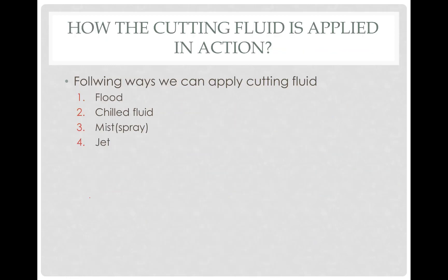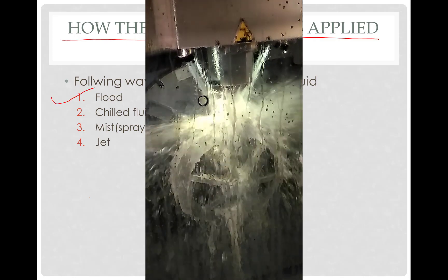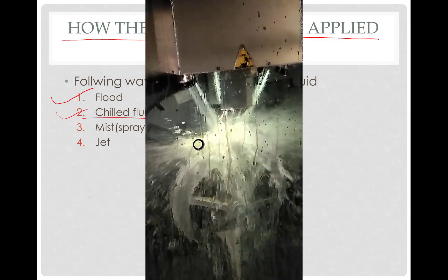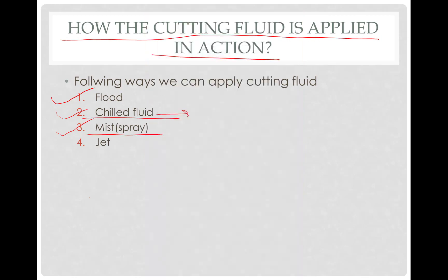How is the cutting fluid applied in practice? The most commonly used method is flood or chilled fluid — for cryogenic machining this is the method applied. For dry machining, mist or spray is applied, which is very effective because the coolant molecules are in small size and spread all over the cutting zone, reducing friction between the tool-chip and tool-workpiece interfaces. The jet method is applied specifically for assisting chip breakage, and also carries all the cooling properties of the fluid.